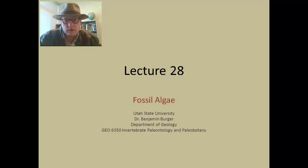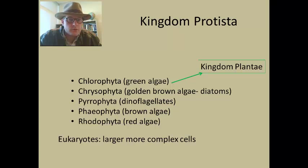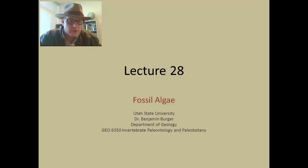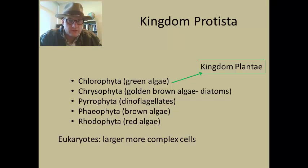Algae is part of a group kingdom called the Protista. The Protista actually contains a number of different groups that are monophyletic, or true groups, within the Protista. These are all eukaryotic organisms, which means that they have larger, more complex cells.